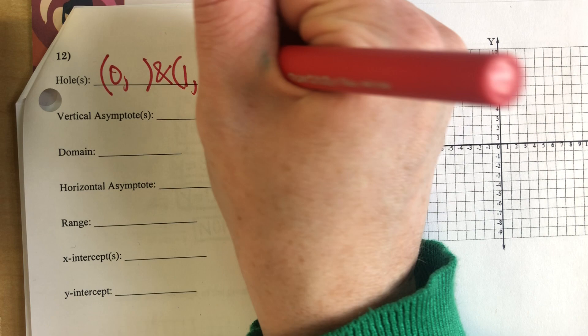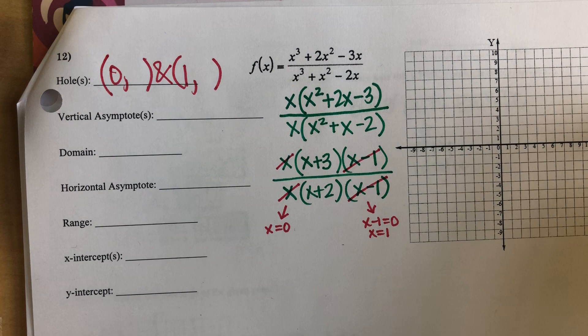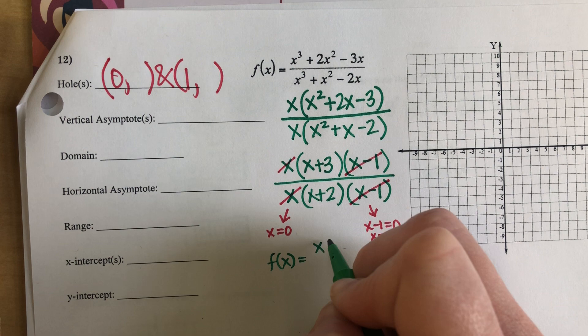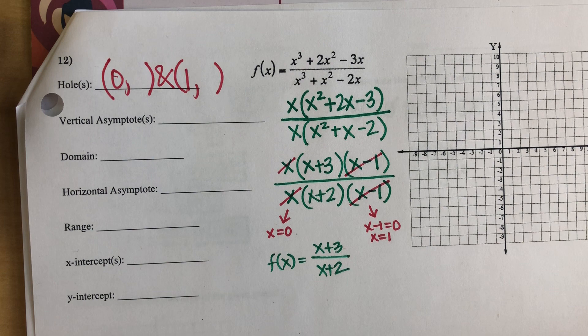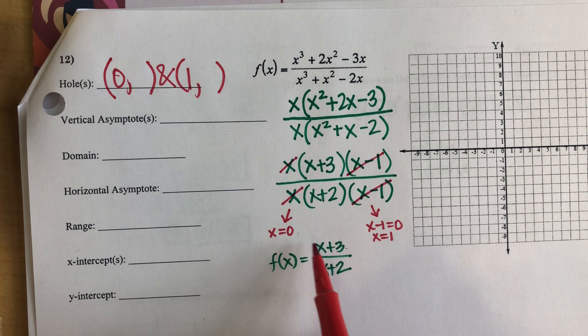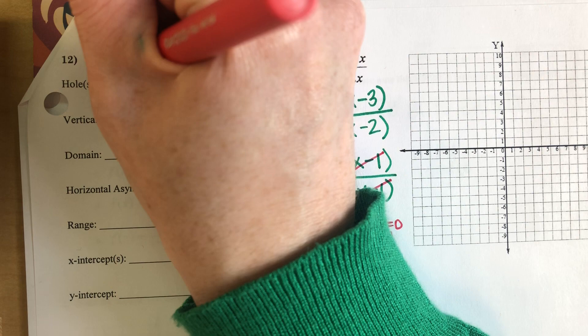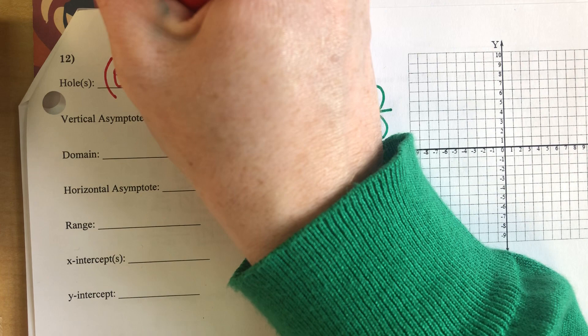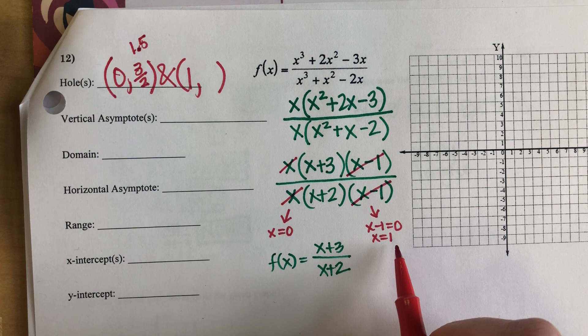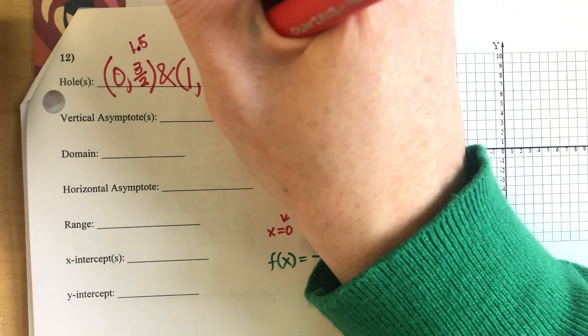I'm going to rewrite my simplified function. With all that stuff canceled out, I have X plus 3 over X plus 2. To find a hole, you simply plug these numbers in one at a time. Zero plus 3 is 3, zero plus 2 is 2, so that means my Y coordinate for that hole is 3 halves — which is the same as the decimal 1.5. If I plug in 1: one plus 3 is 4, one plus 2 is 3, so this is the ordered pair 1, four thirds.